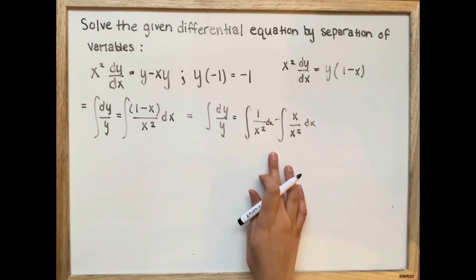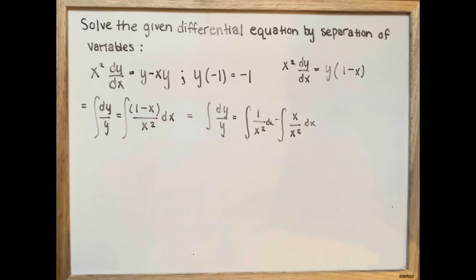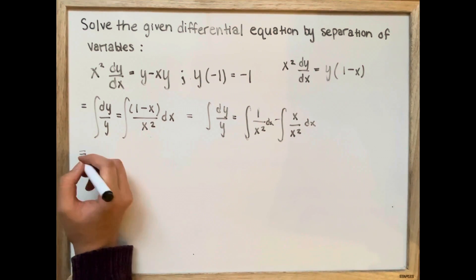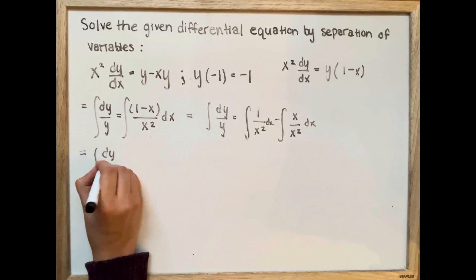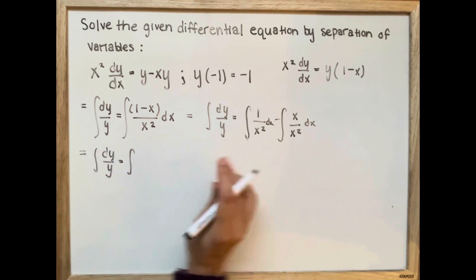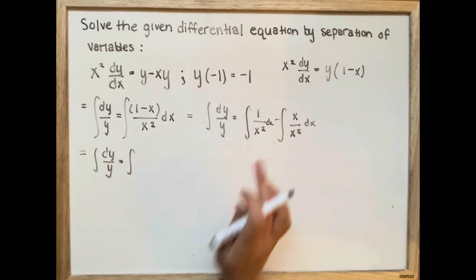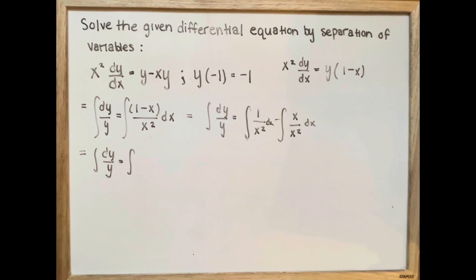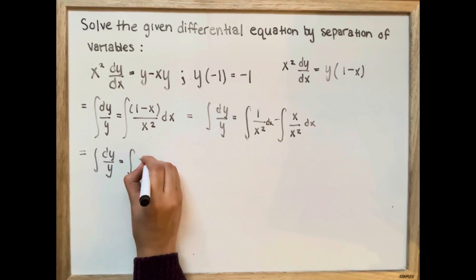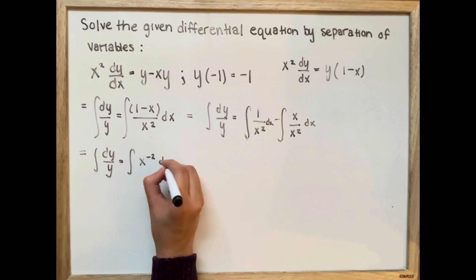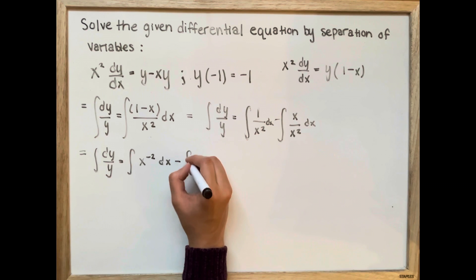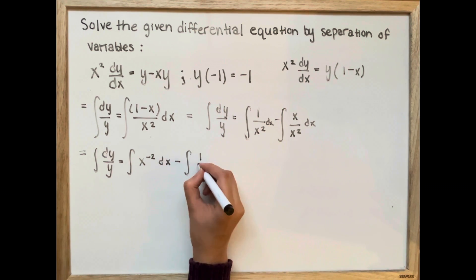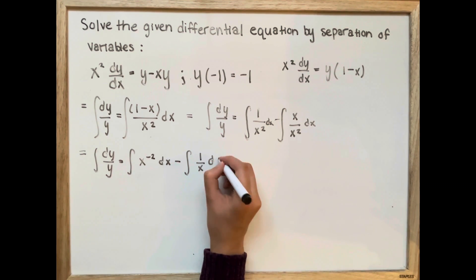We're going to simplify this further. The right side — we're going to bring the exponent to the top, and it's going to be x to the negative 2 dx minus the integral of 1 over x dx.